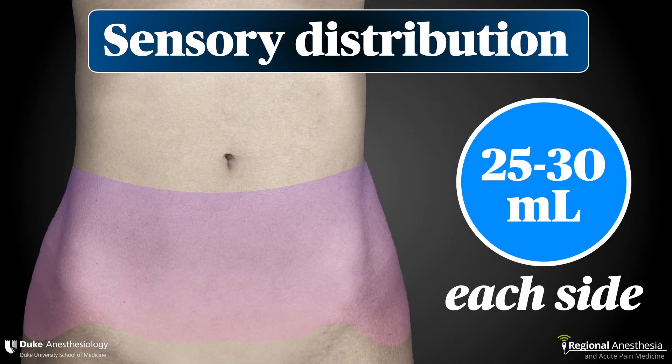This is a volume block, and we get our best results when we use 25 to 30 mls on each side. Make sure you're careful with your concentrations when using large volumes of local anesthetic — these are small nerves, and dilute solutions work well to get a good effect. We can expect to cover the lower abdomen from about the umbilicus to the pubis, including the skin on the lateral aspect of the pelvis and hip joint. We use the TAP block for caesarean delivery, lower abdominal pelvic incisions such as hysterectomy, bladder surgery, some oncologic procedures, and anterior approaches to lumbar spine surgery.